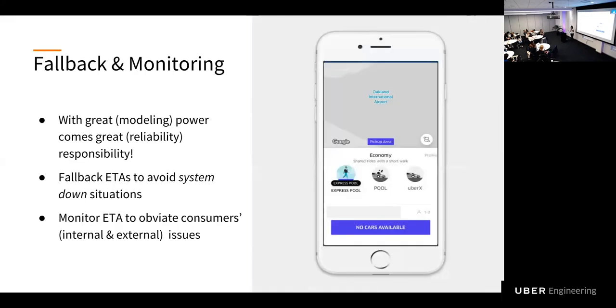And finally, with great modeling power comes greater liability responsibility. We are really working hard to make sure that we have strong fallback ETA systems to avoid system down situations, a case in which our team fails to provide ETAs and routes to the downstream teams will lead to a no-car situation. And that's something we definitely don't want to happen. So we're making sure that we always have something to fallback on. And we also have to very importantly monitor ETAs to obviate customer issues both internal and external, and make everyone's ride magical.